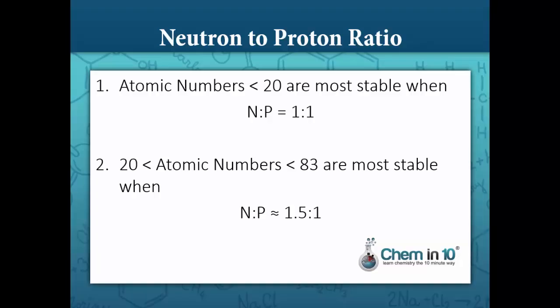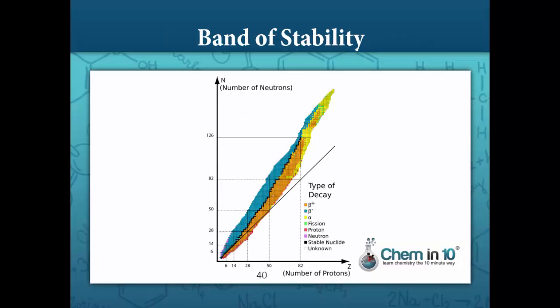Let's begin by talking about the neutron-to-proton ratio. Nuclei with atomic numbers less than 20 are most stable when the neutron-to-proton ratio is 1 to 1. Nuclei with atomic numbers between 20 and 83 are most stable when the neutron-to-proton ratio is approximately 1.5. You can see this on the band of stability, which plots the number of neutrons on the y-axis versus the number of protons on the x-axis. The y-axis over the x-axis gives you the neutron-to-proton ratio.